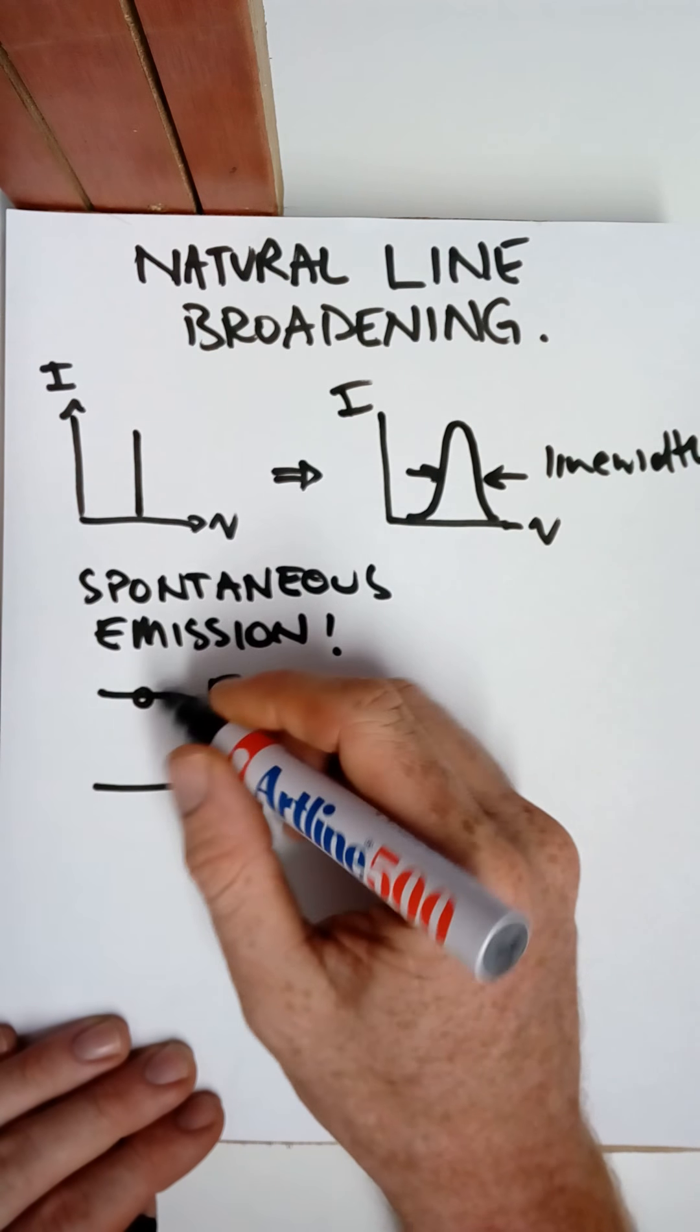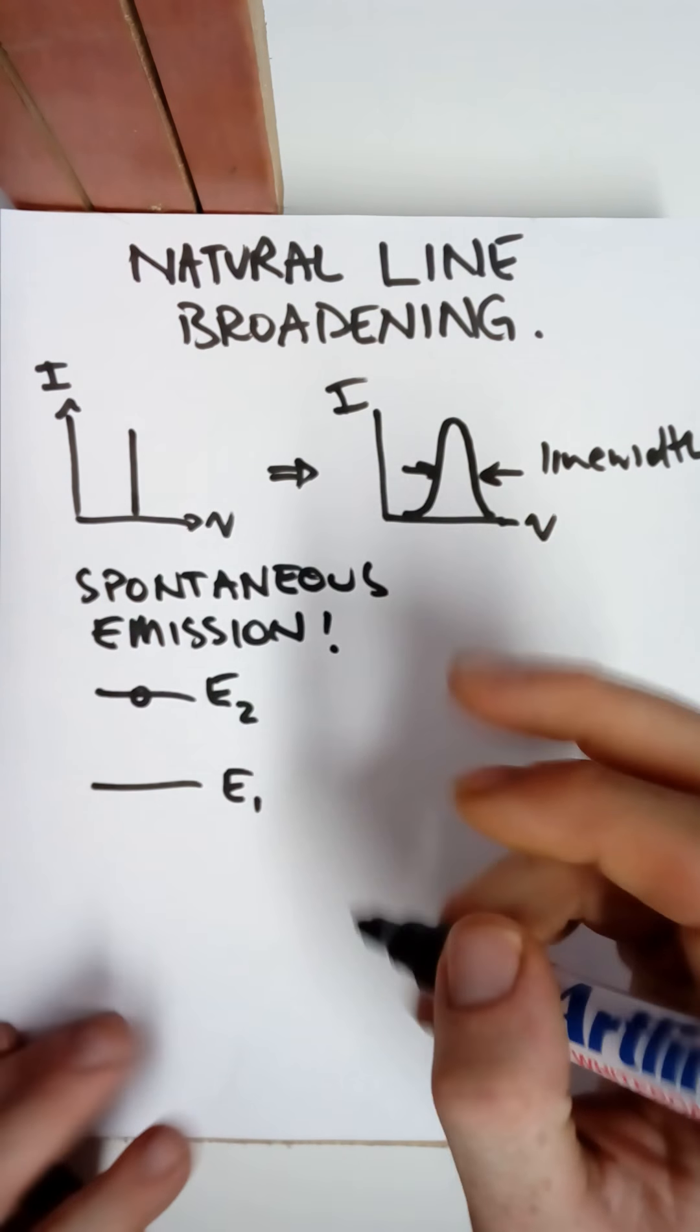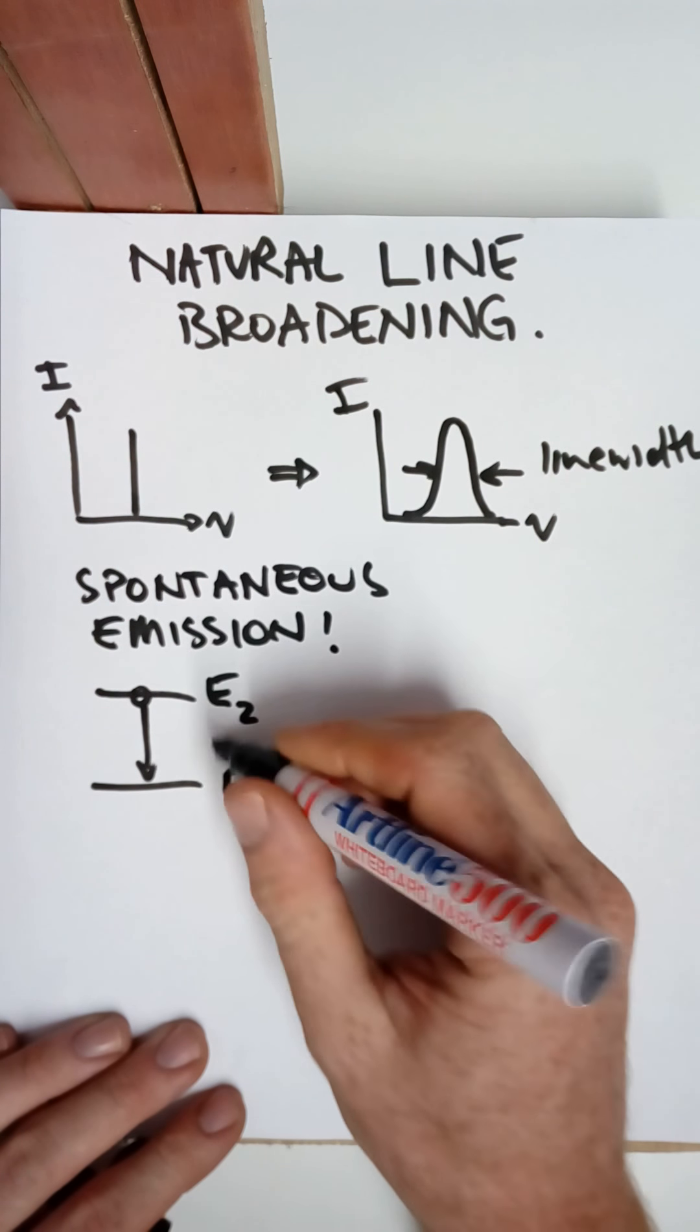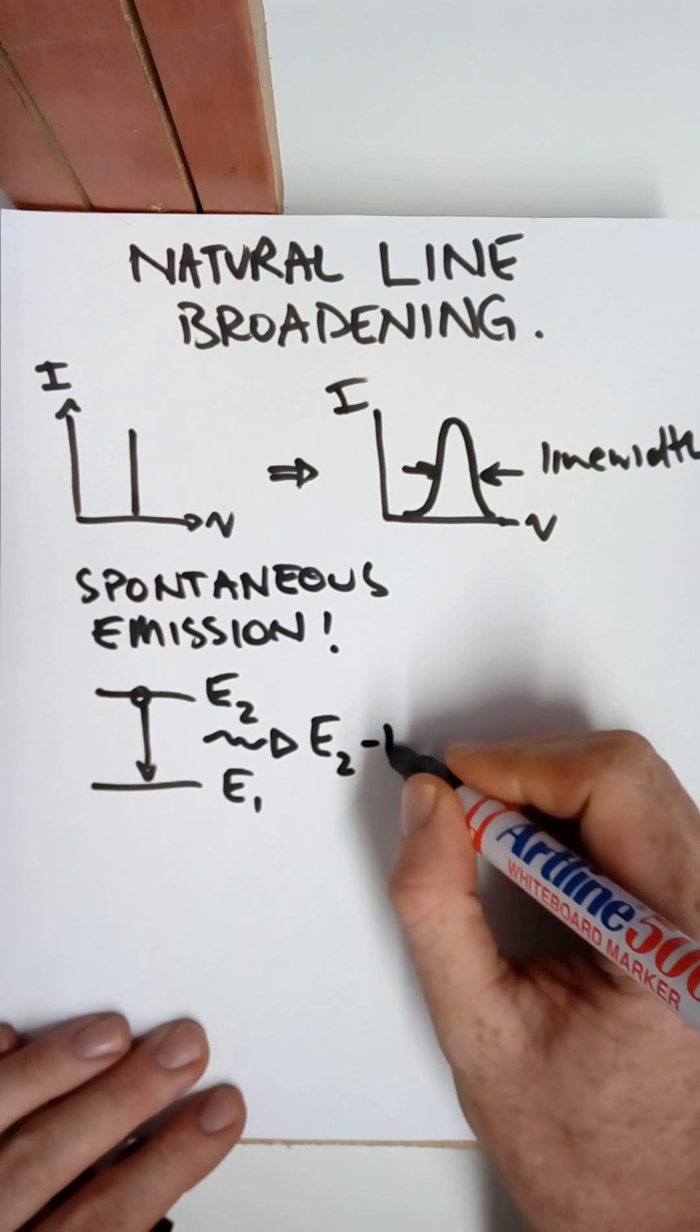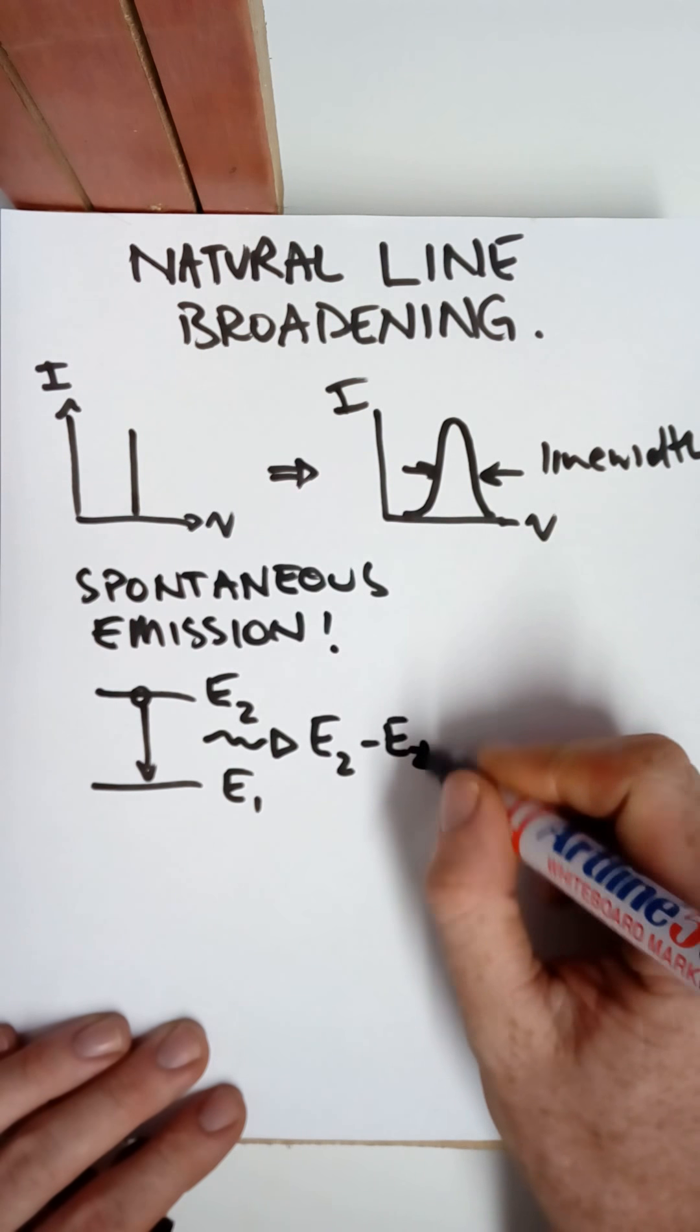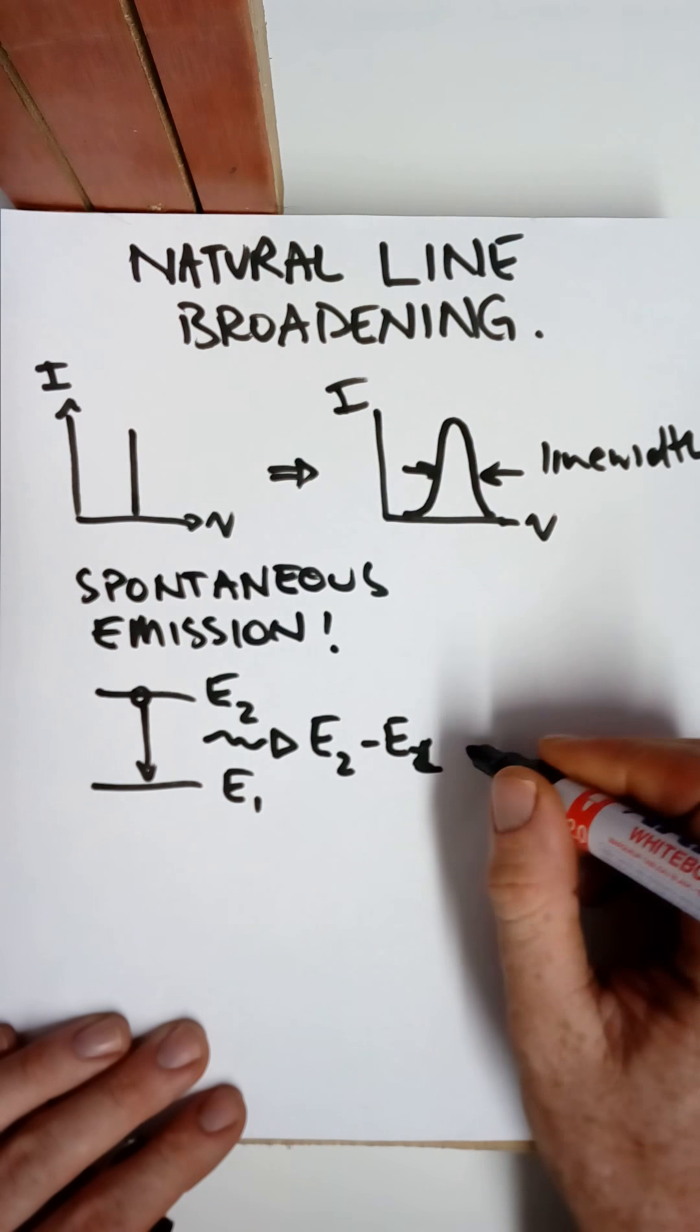Which was some event where we had two energy states, that an electron in a higher energy state would randomly drop down to a lower energy state, emitting some photon.